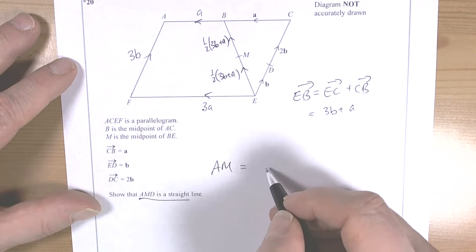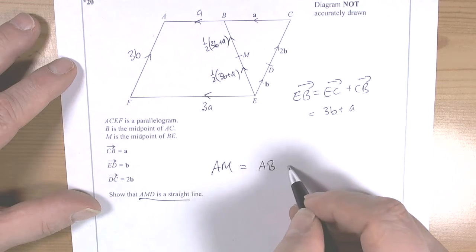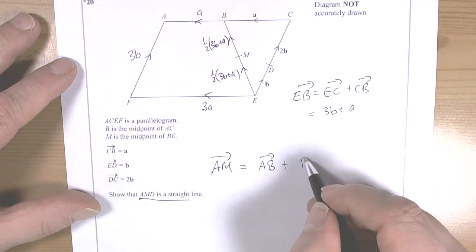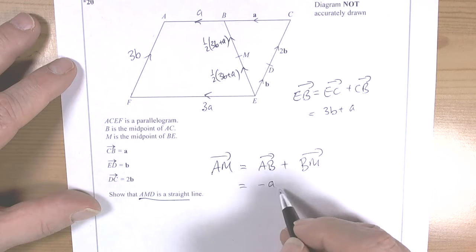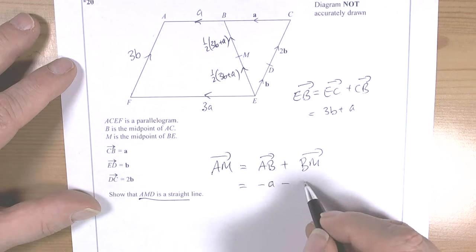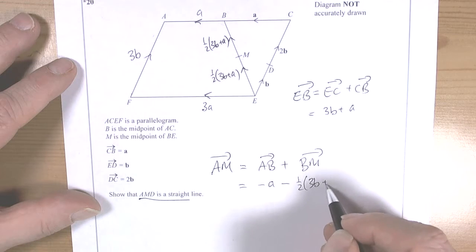So A to M is going to be the journey from A to B plus B to M. Well, A to B was negative a, B to M was negative a half of 3b plus a.